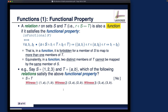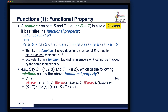When disproving, one witness is logically sufficient, though a question may ask for all witnesses. Another witness: (3, a) and (3, b). The domain value 3 equals 3, so a must equal b according to the definition — but a ≠ b, so that's another violation.